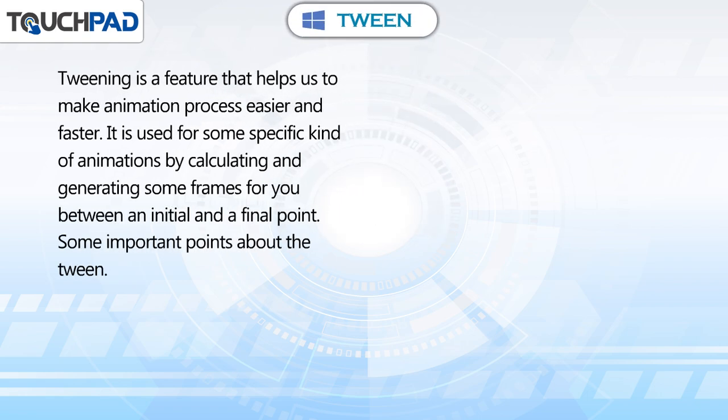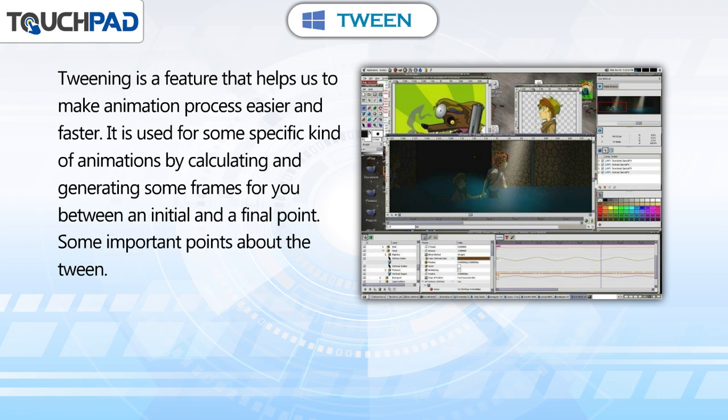Tweening is a feature that helps us to make the animation process easier and faster. It is used for some specific kind of animations by calculating and generating some frames for you between an initial and a final point.